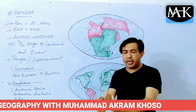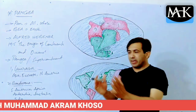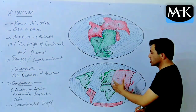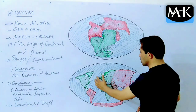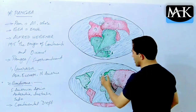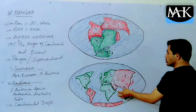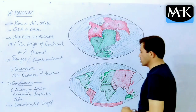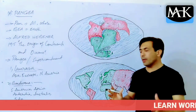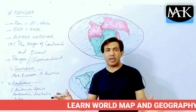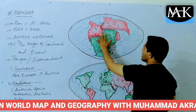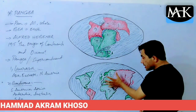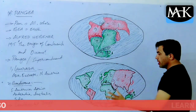When plates diverge, a gap is created. Because of divergence, we get oceans, gulfs, or seas. Right now we have the Atlantic Ocean between North and South America and Europe and Africa, and the Indian Ocean south of Asia, east of Africa, and west of Australia. These water bodies formed because of the divergence of plates — there was originally no Atlantic Ocean.